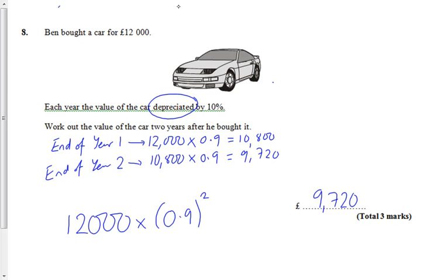And if you do that in a calculator, or times by 0.9, 0.9 again, which is basically what we've done here, once, twice, just a quick method, takes you quickly to the £9,720. Fantastic.